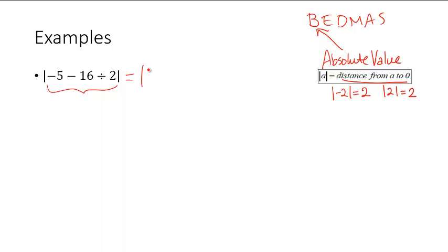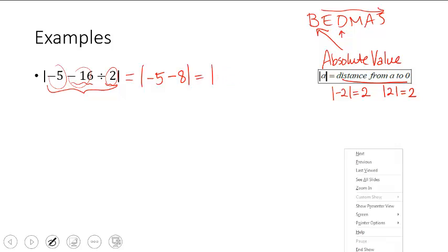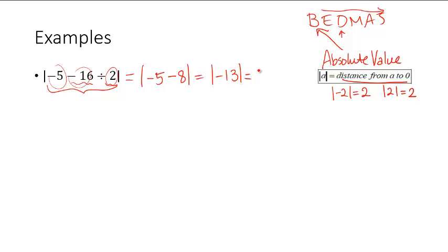So we've got negative 5 minus 16 divided by 2. We have to follow the order of operations. We have no exponents. We have a division. So don't fall for going minus 5 minus 16 first. You've got to divide negative 16 by 2 first before moving on. Remember, signs are stuck to the numbers. The signs in front of the number is stuck to the number. So we've got negative 5 still hanging out. Negative divided by a positive is negative. 16 divided by 2 is 8. That gives us absolute value of negative 5 minus 8, which is negative 13. And the absolute value of that is just 13.